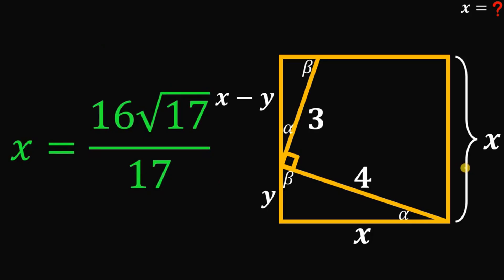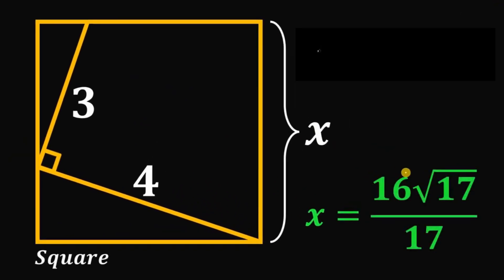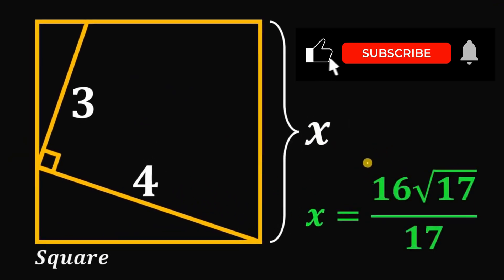Therefore, given this figure, the side of this square is just 16 times square root of 17 all over 17 units. And as always, we are done.